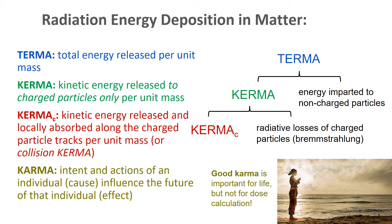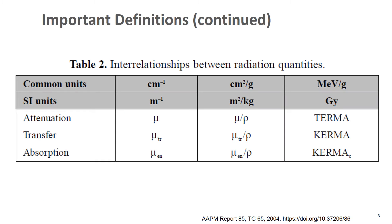This table shows the relationship between TERMA, KERMA, and collision KERMA and the attenuation coefficients for the photon beam. The mass attenuation coefficient is related to TERMA — in narrow beam geometry, any scattered event removes a photon from the beam, which is all included in TERMA. Then there's KERMA, which uses the mass energy transfer coefficient, and collision KERMA, which uses the mass energy absorption coefficient.